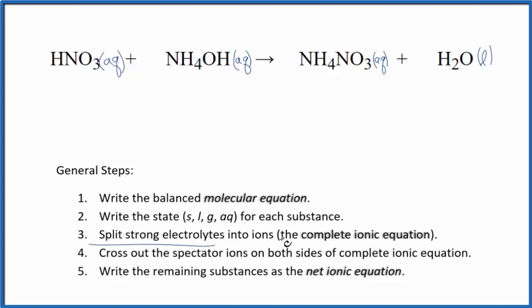Now we can split the strong electrolytes into their ions for the complete ionic equation. Hydrogen has a 1+ charge, and the nitrate ion is 1-. We'll write H+ for our hydrogen ion. I won't write aqueous each time. Plus I have one nitrate ion, NO3-.